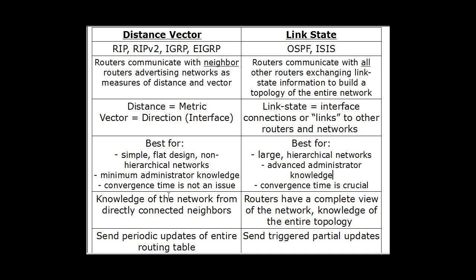What is convergence? When talking about routers, convergence means that all the routers in the network have the same picture of the network. If you have three routers and one of the links goes down, if all the routers don't yet know about that network being down, then the network has not converged. Once all of the routers have learned that the network has gone down and the link is gone, then the network has converged.